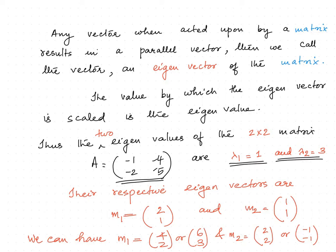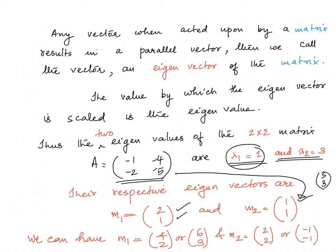The respective eigenvectors are [2, 1] and [1, 1]. We could see that when the matrix A acts on [2, 1], it resulted in the same vector [2, 1], which means the scaling is 1. That means the eigenvalue is 1 and the corresponding eigenvector is [2, 1]. When this matrix acts on [1, 1], we can see that it results in the vector [3, 3]. This shows that the eigenvalue is 3 and the eigenvector is [1, 1].